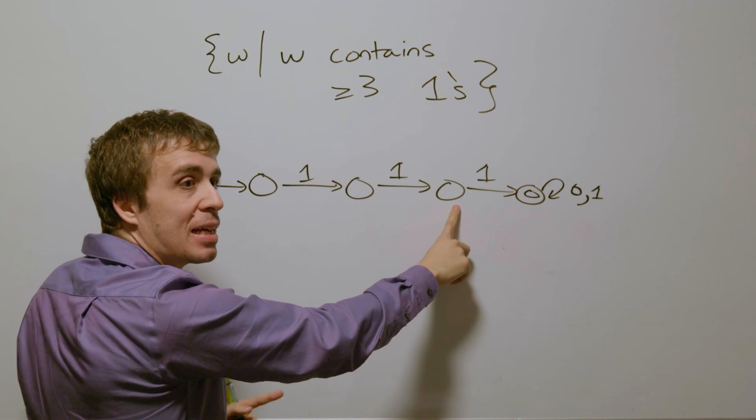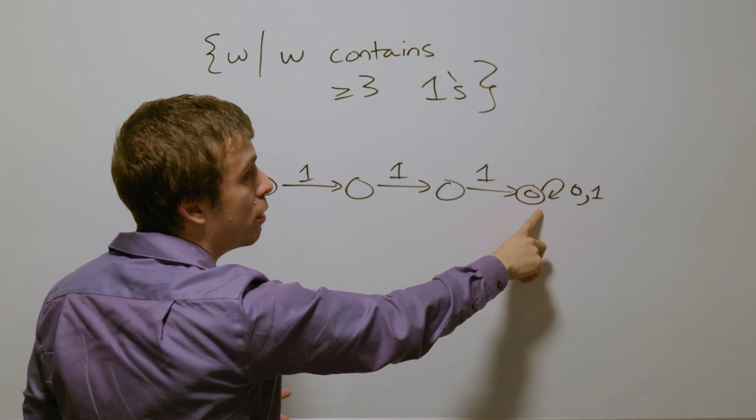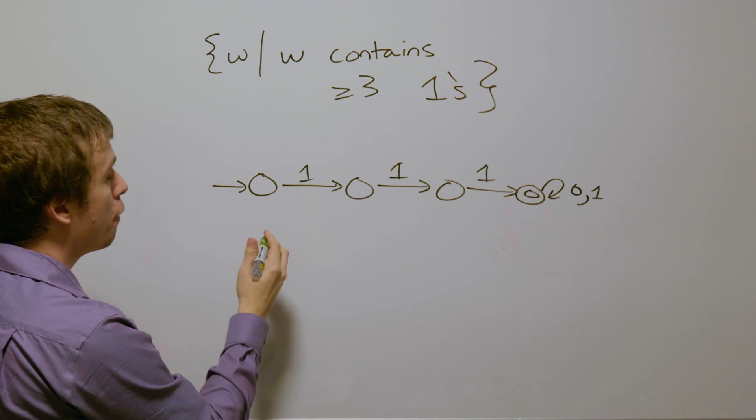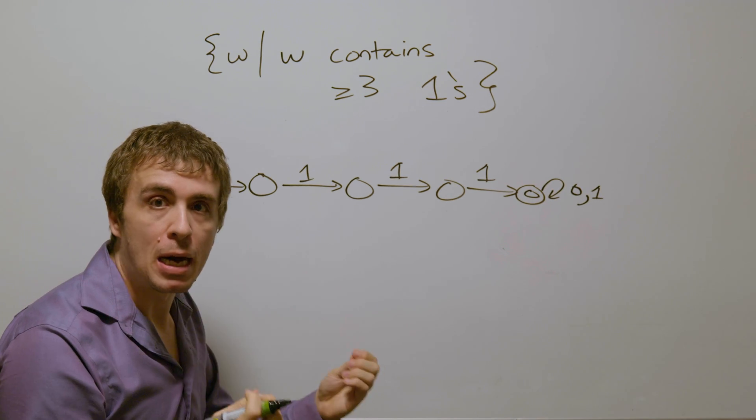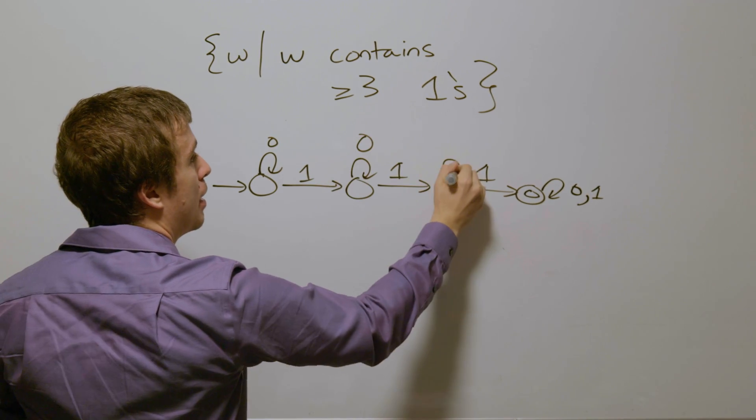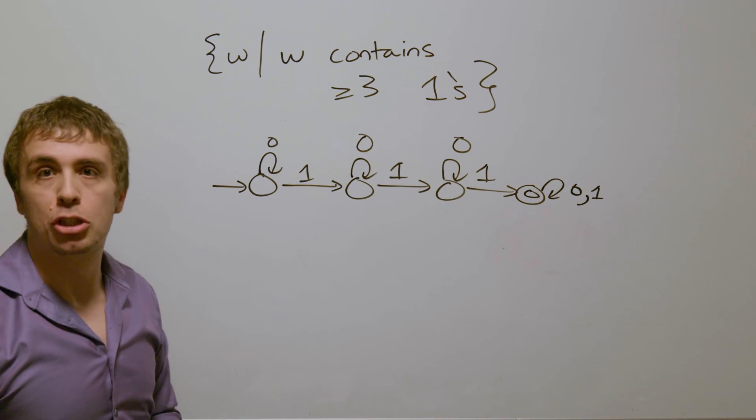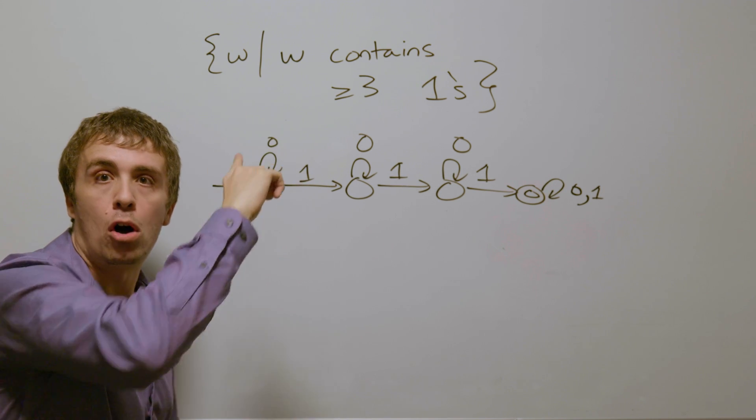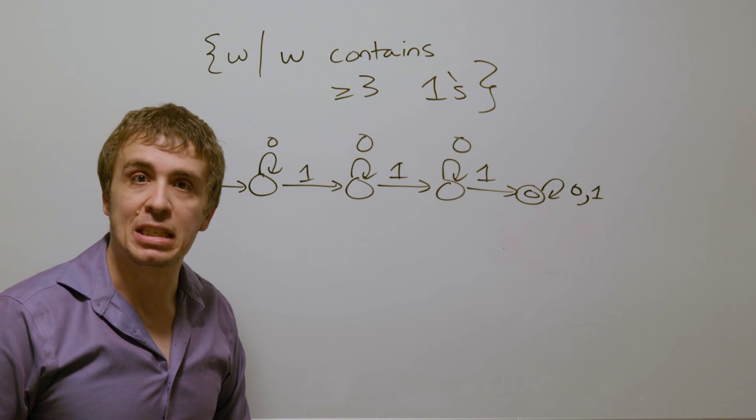this one we read exactly two ones, and here is at least three. And so therefore, since the number of zeros does not change the number of ones, let's have these be self-loops. And so therefore, this is a deterministic finite automaton for all binary strings that have at least three ones in them.